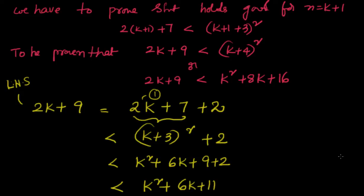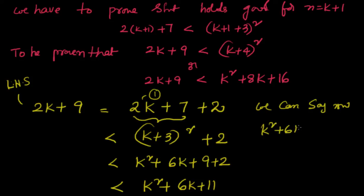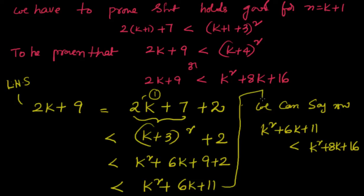Now we can say that k squared plus 6k plus 11 is less than k plus 4 whole square, or k squared plus 8k plus 16. Therefore, 2k plus 9 is less than that. We can say k squared plus 6k plus 11 is less than k squared plus 8k plus 16 for any value of k which is a natural number. Therefore, 2k plus 9 is less than k squared plus 8k plus 16.